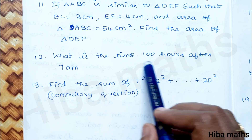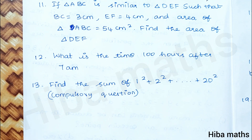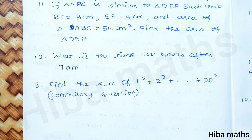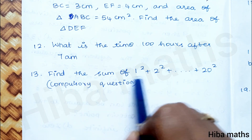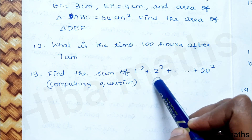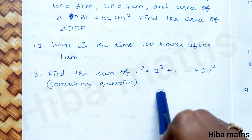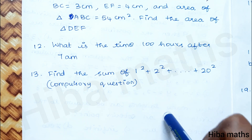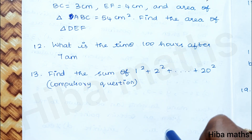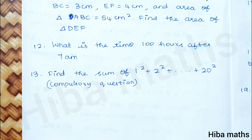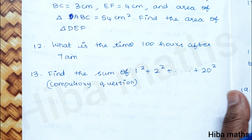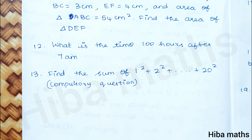There is also a question: what is the time 100 hours after 7 AM? These are important questions. The 13th question — find the sum of the series 1 squared plus 2 squared up to 20 squared. This is a compulsory question from Chapter 2, Section 2.9 on special series.